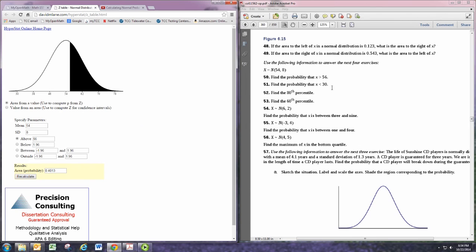For the next example, find the probability that x is less than 30. We select below, put in 30, and hit recalculate.